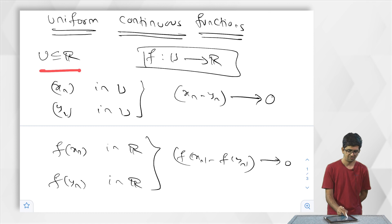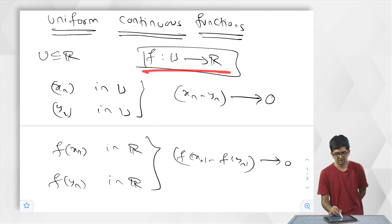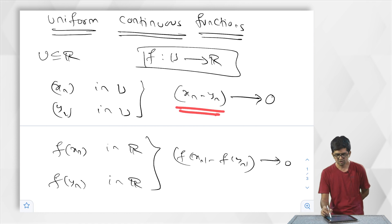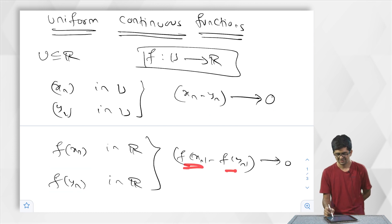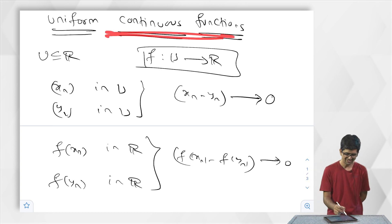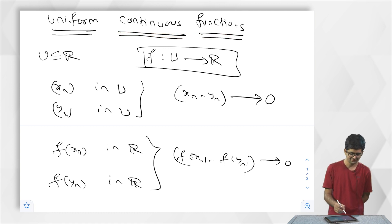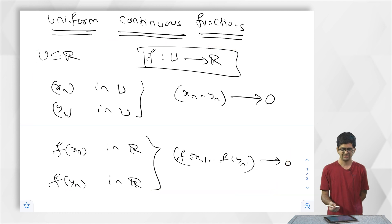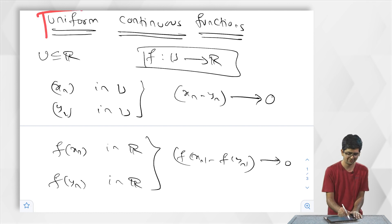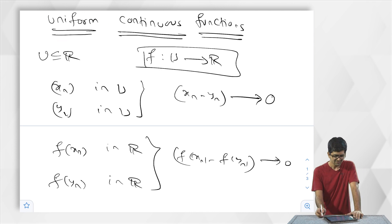Let me repeat: f is uniformly continuous if for any two sequences in U whose difference converges to 0, the difference of the corresponding image sequences also converges to 0. This is what we mean when we say f is a uniformly continuous function. It is not immediately clear from this definition that it is related to continuous functions, but as an adjective added to 'continuous,' it should at least imply continuity.